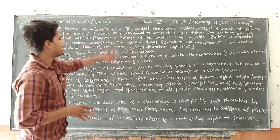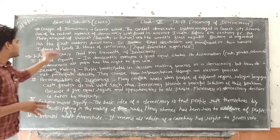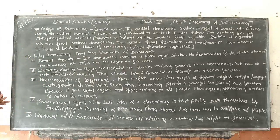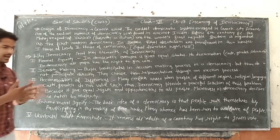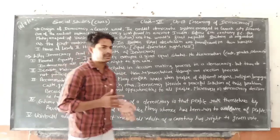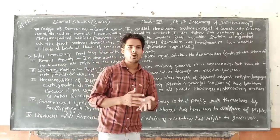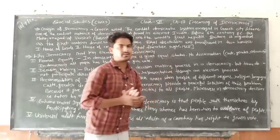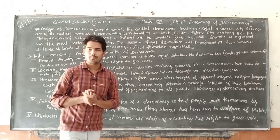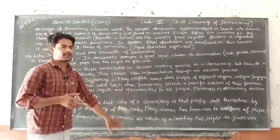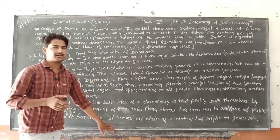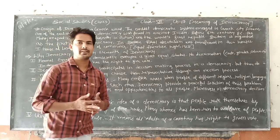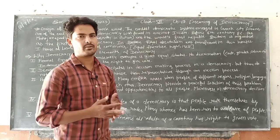So the entire chapter is complete — key features of democracy and origin of democracy have been covered. Types of democracy like autocracy and democracy, I had already explained in the first video. All key elements are now complete. In the next video, notes will be provided. Thank you.